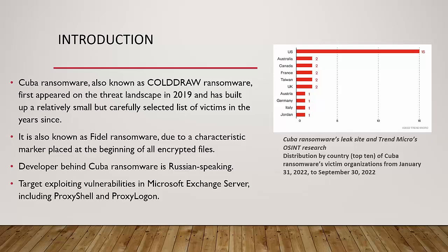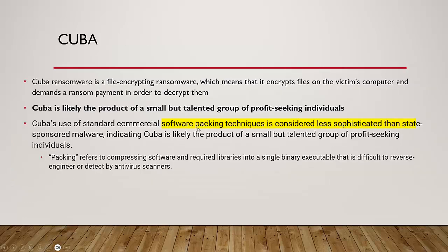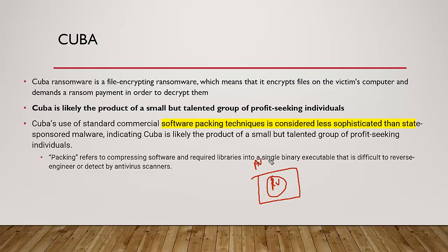Cuba is a file-encrypting ransomware that encrypts files on a victim's computer and demands a ransom payment. It employs double extortion — encrypting data, demanding ransom, and if not paid, releasing the data on the dark web. It is believed to be a product of a small, talented, profit-seeking group based in Russia. A key feature is their software packing technique, where the ransomware is wrapped in extra layers, making it difficult for antivirus or behavioral detection tools to detect it.